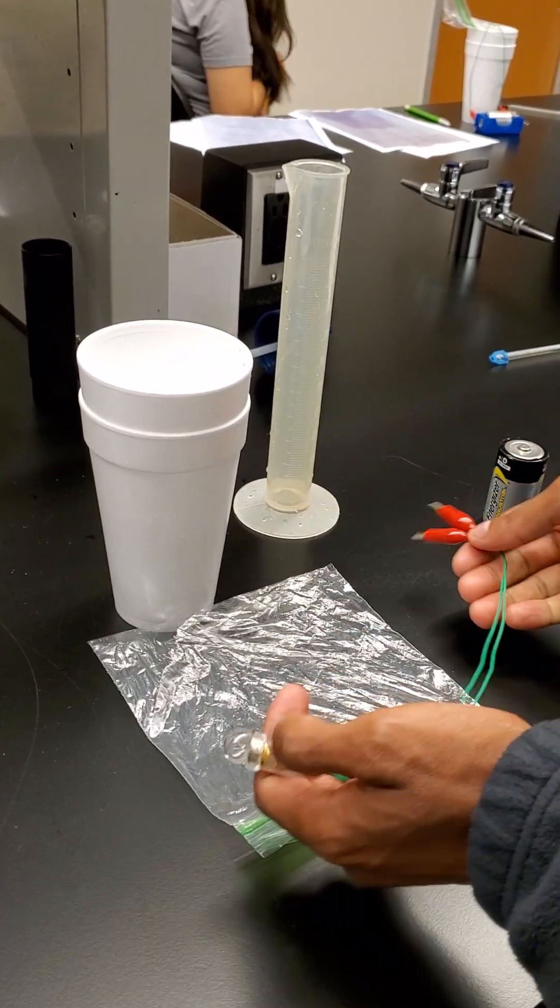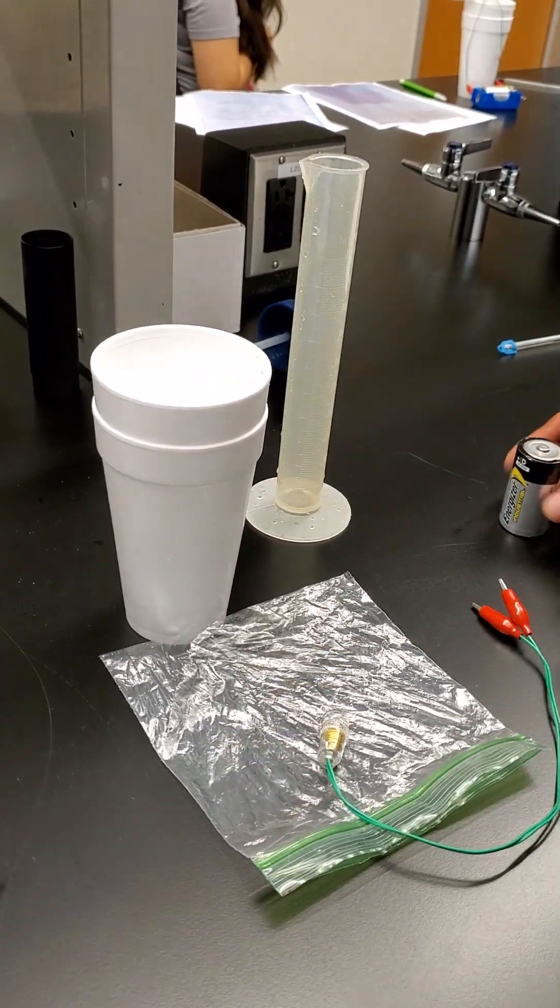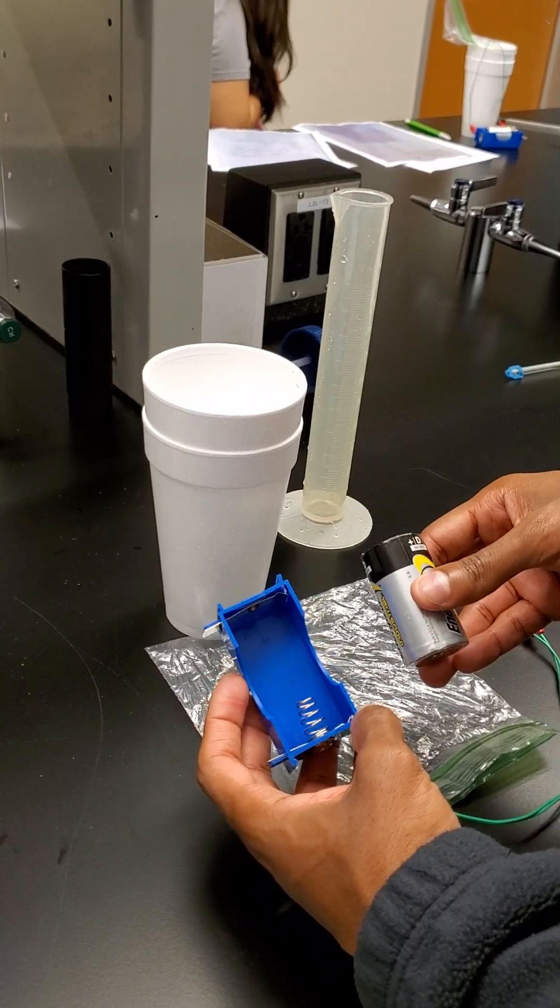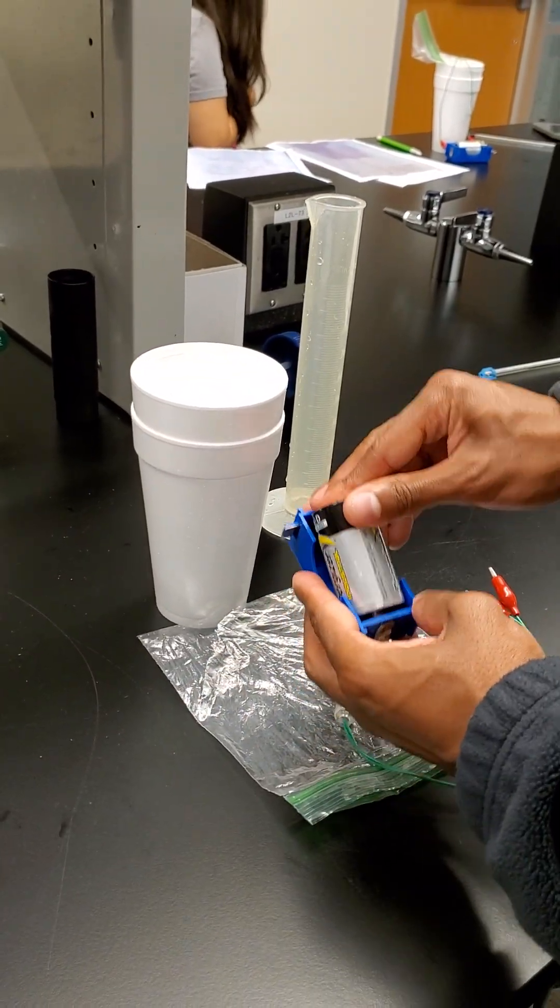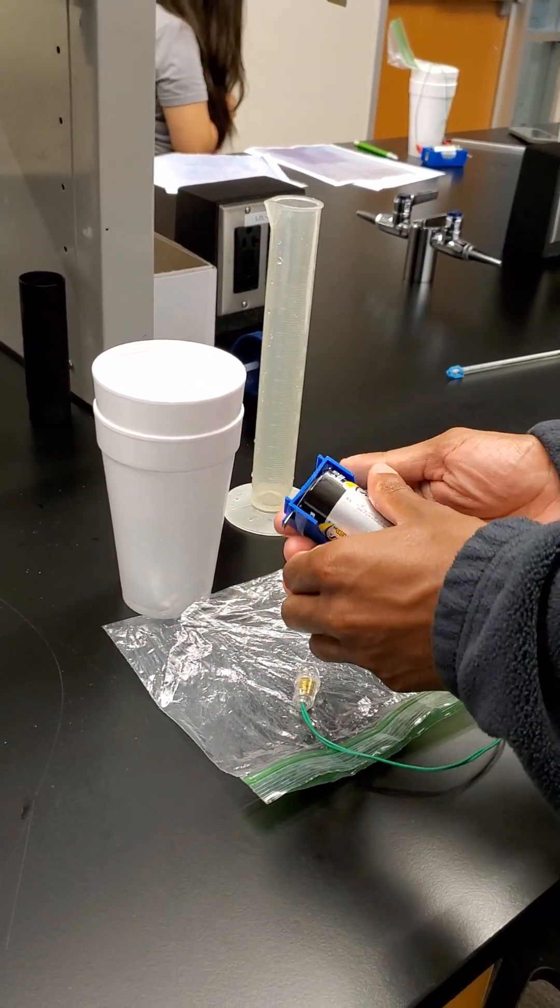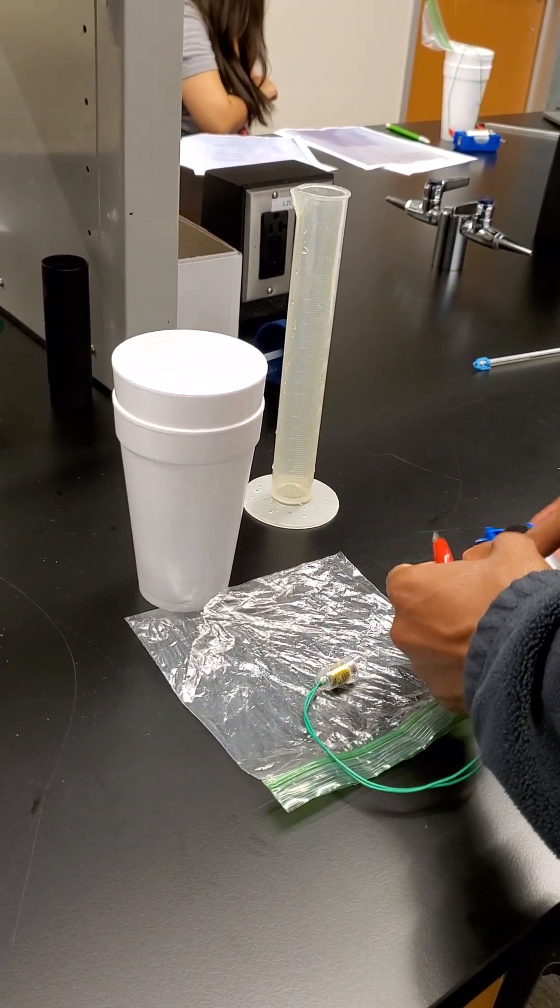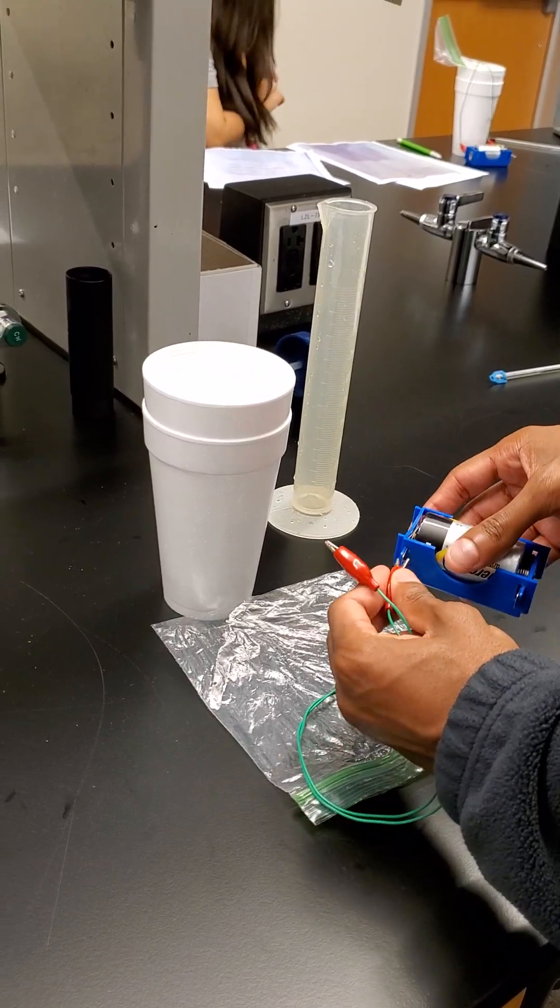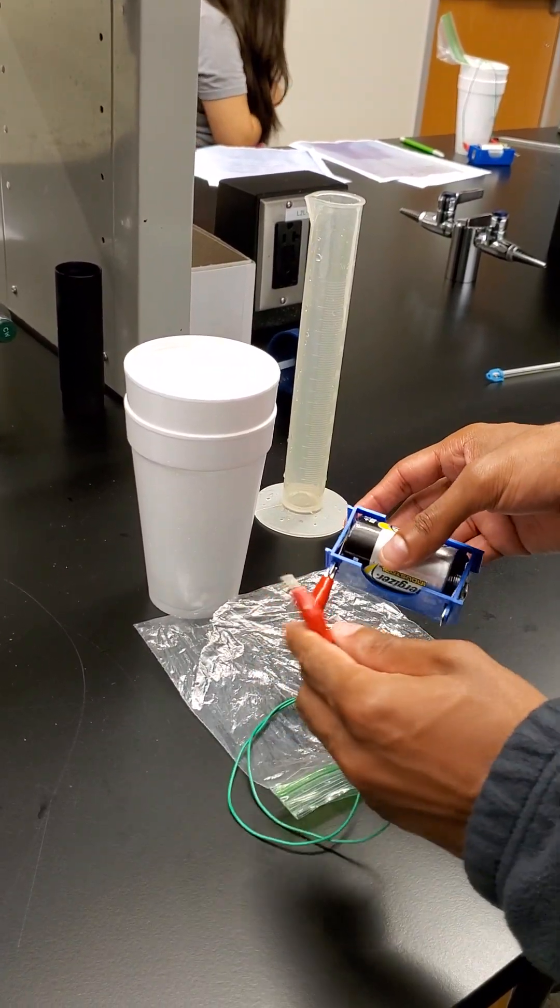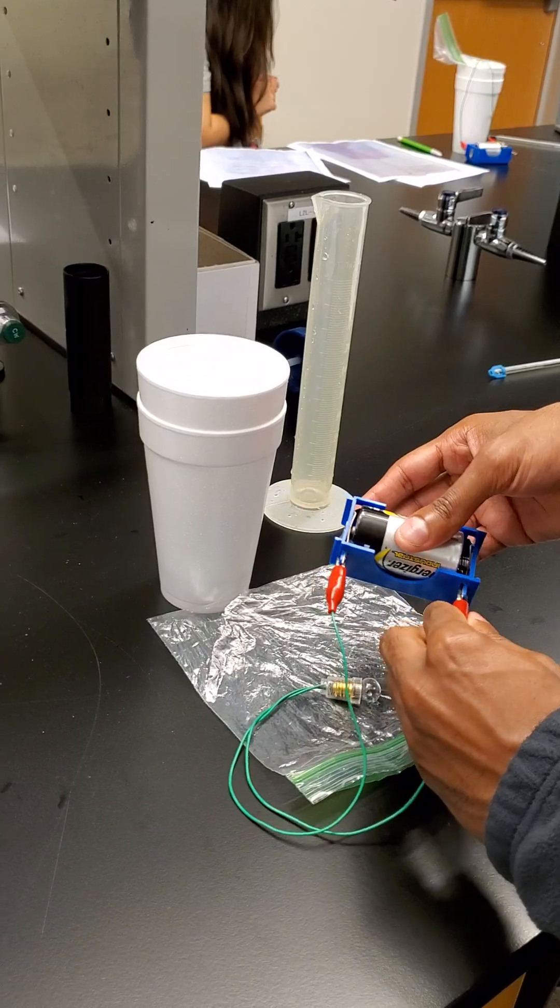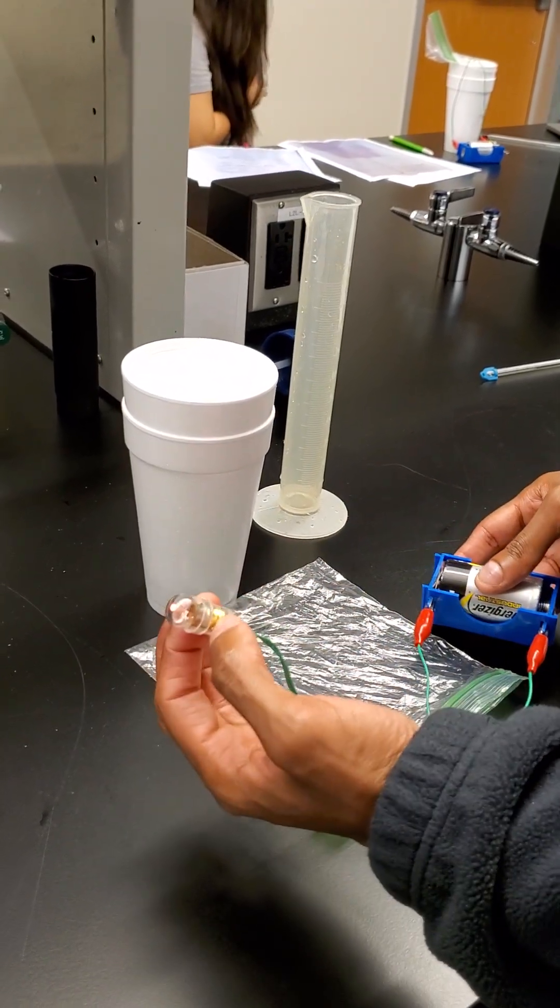Our makeshift battery. So these alligator clips are going to be hooked onto the battery, and then there is a bulb. You see how it starts lighting up the bulb because electricity is flowing through it. The bulb is lighting now.